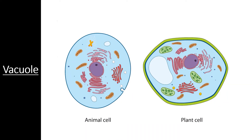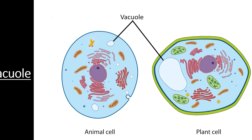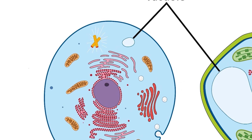A vacuole is a very simple organelle that serves a wide variety of purposes in different organisms. In general, a vacuole is a simple spherical membrane that holds whatever the cell needs it to hold. In animal cells and many single-celled organisms, the vacuole is an organelle that holds excess water and sometimes waste products. Eukaryotes use these chambers to help regulate the chemistry of the cytoplasm. Toxins, wastes, and byproducts are often stored in vacuoles so they cannot affect the chemistry of the rest of the cell.